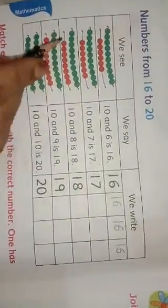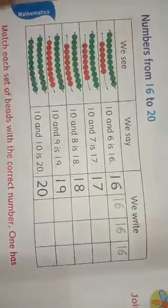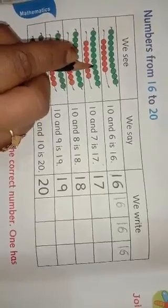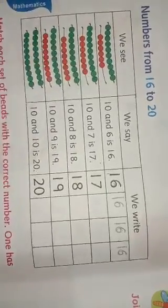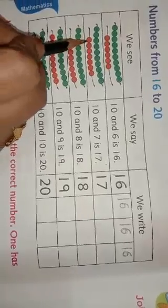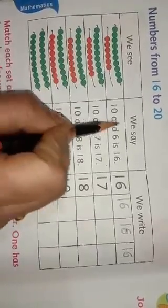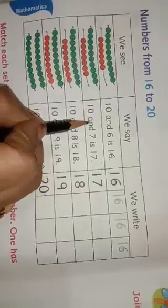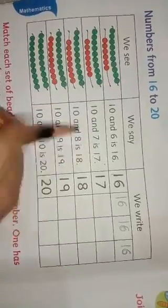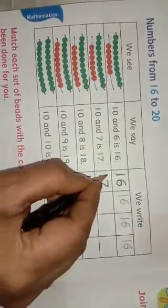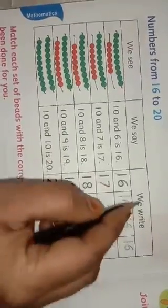Then next we see the beads. 1, 2, 3, 4, 5, 6, 7, 8, 9, 10. Then in red color beads: 1, 2, 3, 4, 5, 6, 7. Means we say 10 and 7 is 17. 1, 7, 17. We write.